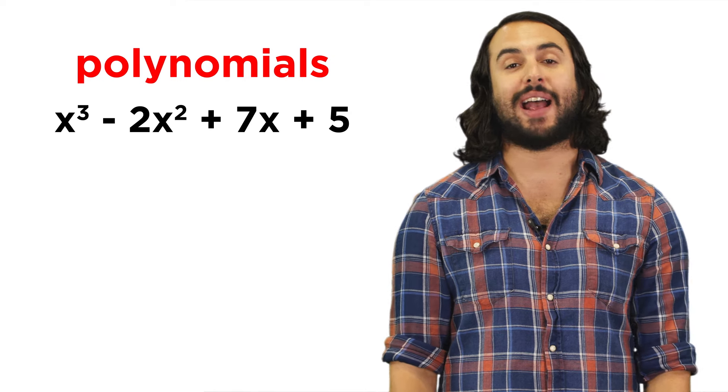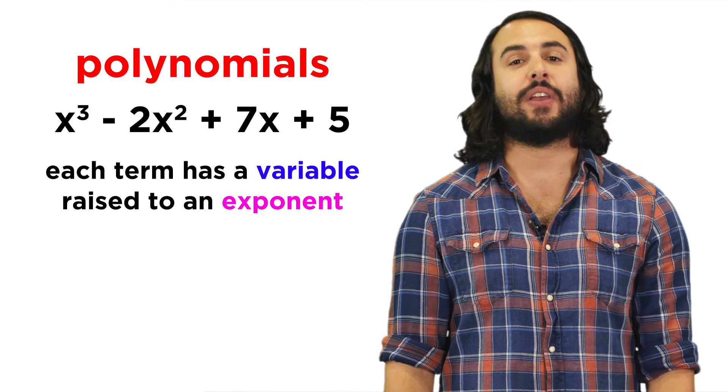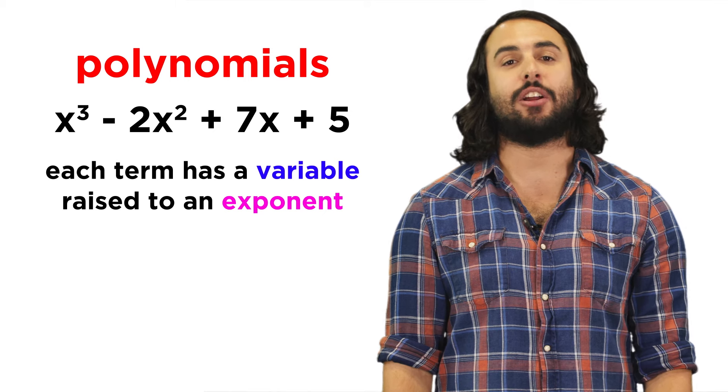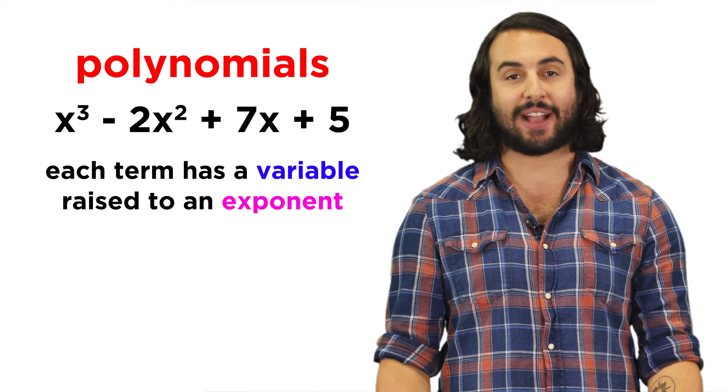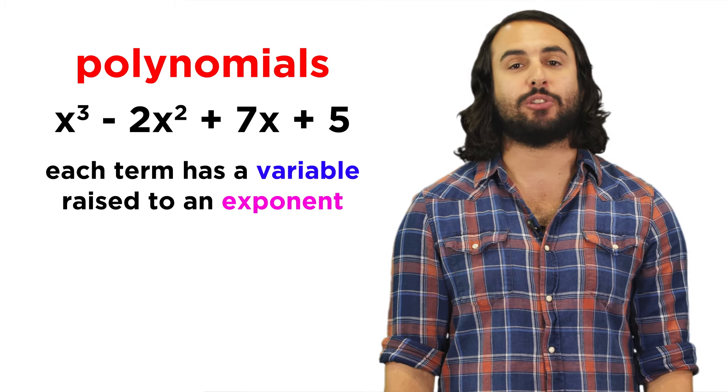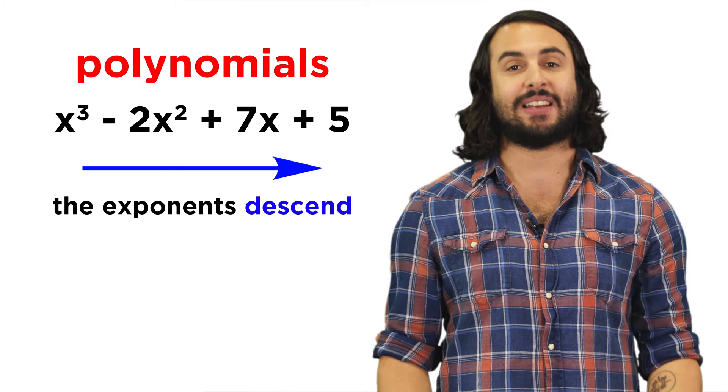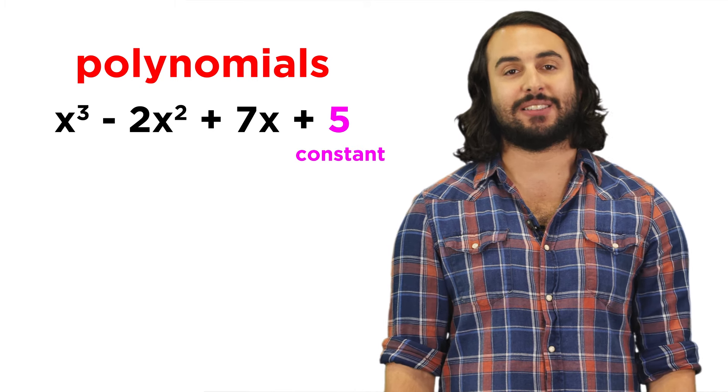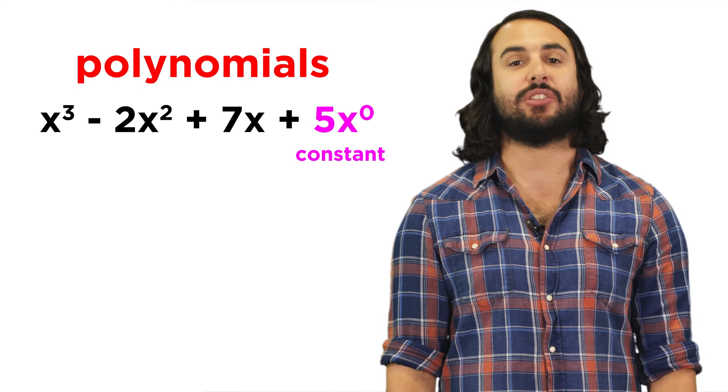So we've defined the polynomial as a concept. It's an expression or equation involving multiple terms that each include a variable raised to some positive whole number exponent, which may also be multiplied by some coefficient. These are listed in descending order, ending with any constant which can be thought of as the x to the zero term, since x to the zero equals one.